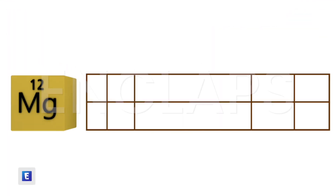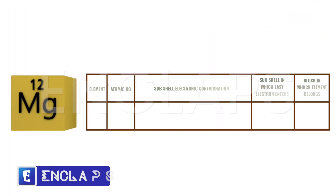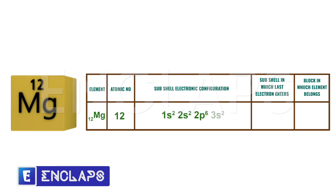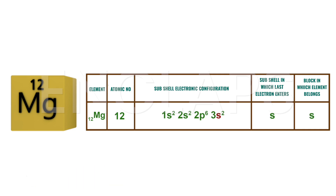Now we are going to find out the block of magnesium. Magnesium has its atomic number 12, so its subshell electronic configuration can be written as 1s2, 2s2, 2p6, 3s2. Here the last electron enters the S subshell, so magnesium belongs to S block in the periodic table.